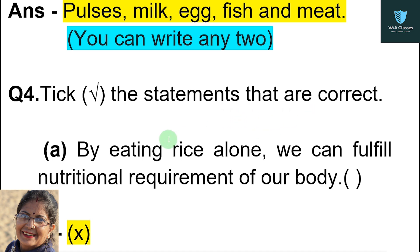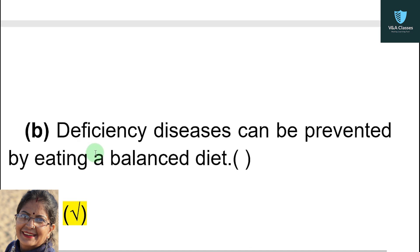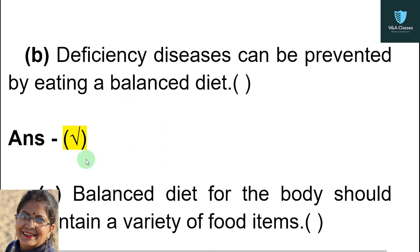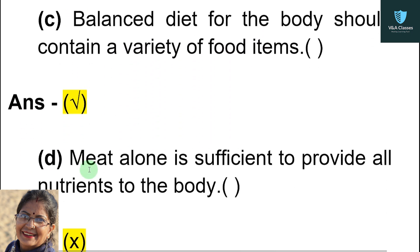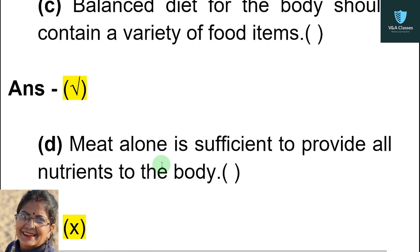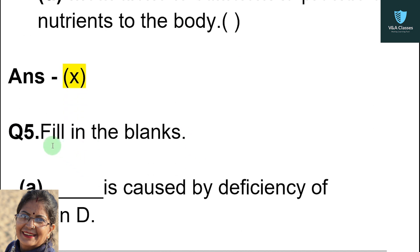Question number four: tick the statements that are correct. Statement: by eating rice alone we can fulfill the nutritional requirement of our body — answer: wrong. Next — deficiency diseases can be prevented by eating a balanced diet — answer: correct. Next — a balanced diet for the body should contain a variety of food items — answer: right. Next — meat alone is sufficient to provide all nutrients to the body — answer: wrong.